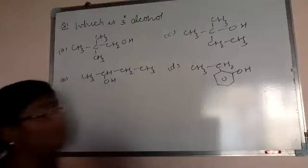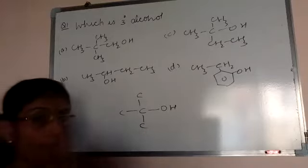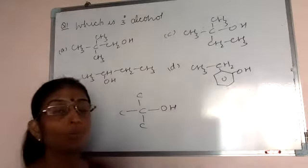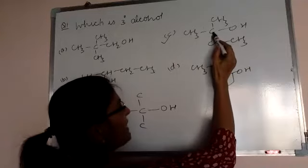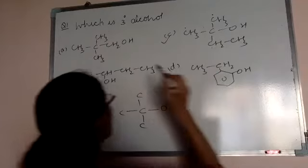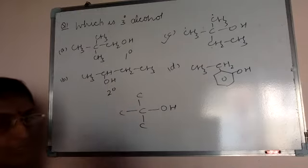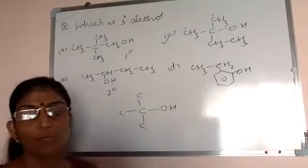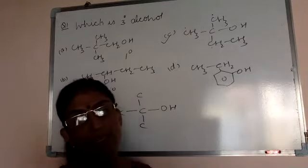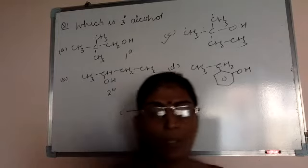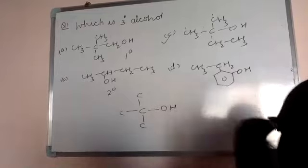The first one is primary. A tertiary alcohol contains a carbon attached to 3 other carbon atoms — then it is called tertiary alcohol. The OH-containing carbon attached to 3 other carbon atoms is known as tertiary alcohol, so option C is correct.